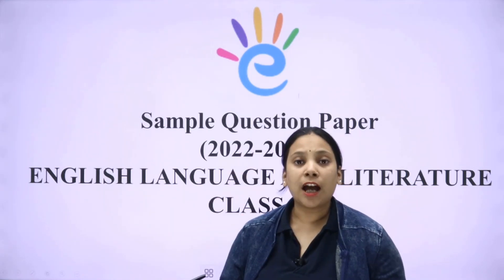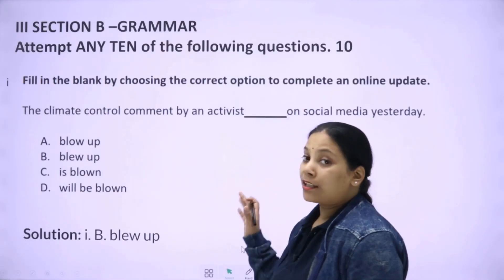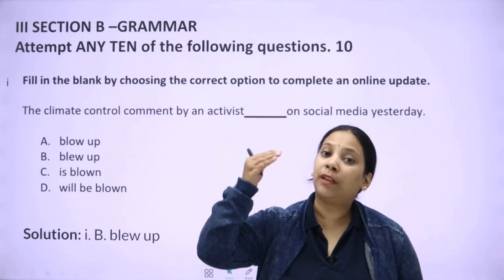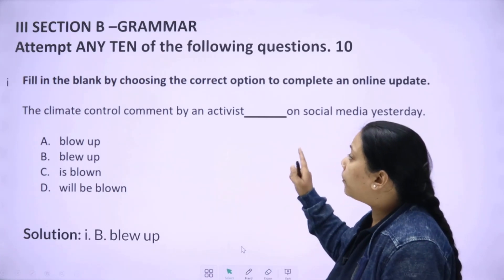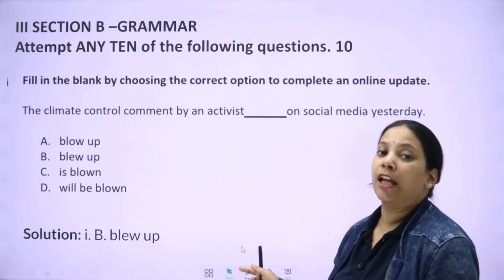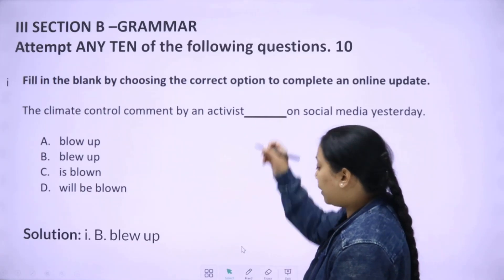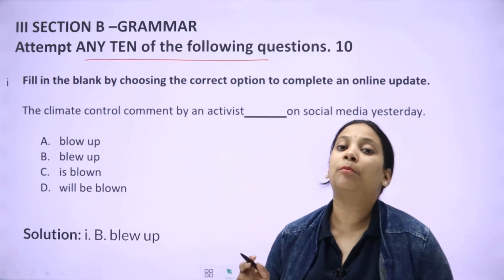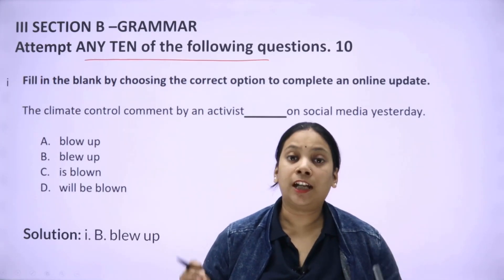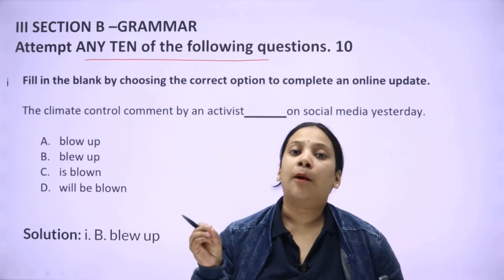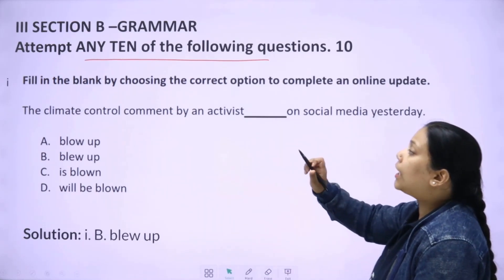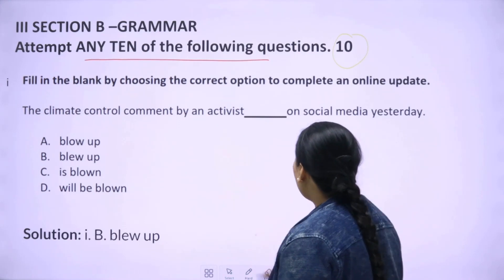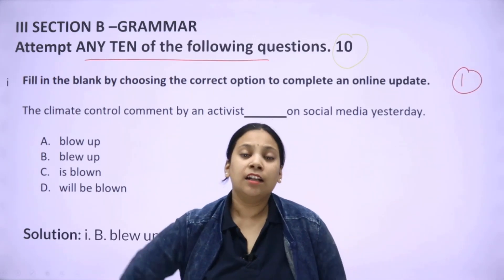Now we are going to discuss Section B, which has grammar and writing. Earlier, sections B and C were separate, but now Section B has both grammar and writing parts involved. In Section B, the first 12 questions are grammar based. Out of those 12 grammar questions, you need to attempt only 10. Read all the instructions very carefully — each of those 10 questions carries one mark.